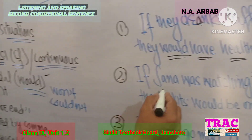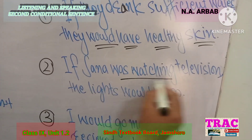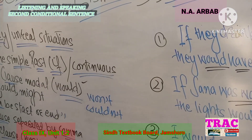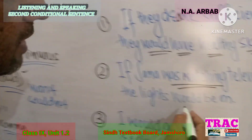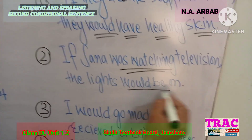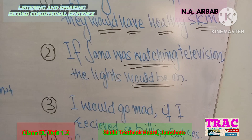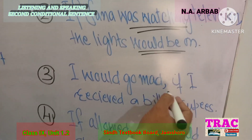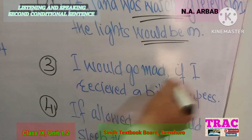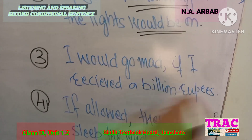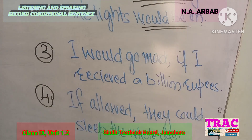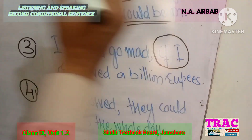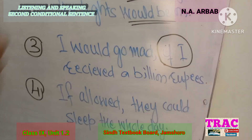For example: 'If Sana was watching' — we are talking about continuous — 'the lights would be on.' Another example: 'If I received a billion rupees' — here we are talking about an imaginary situation.